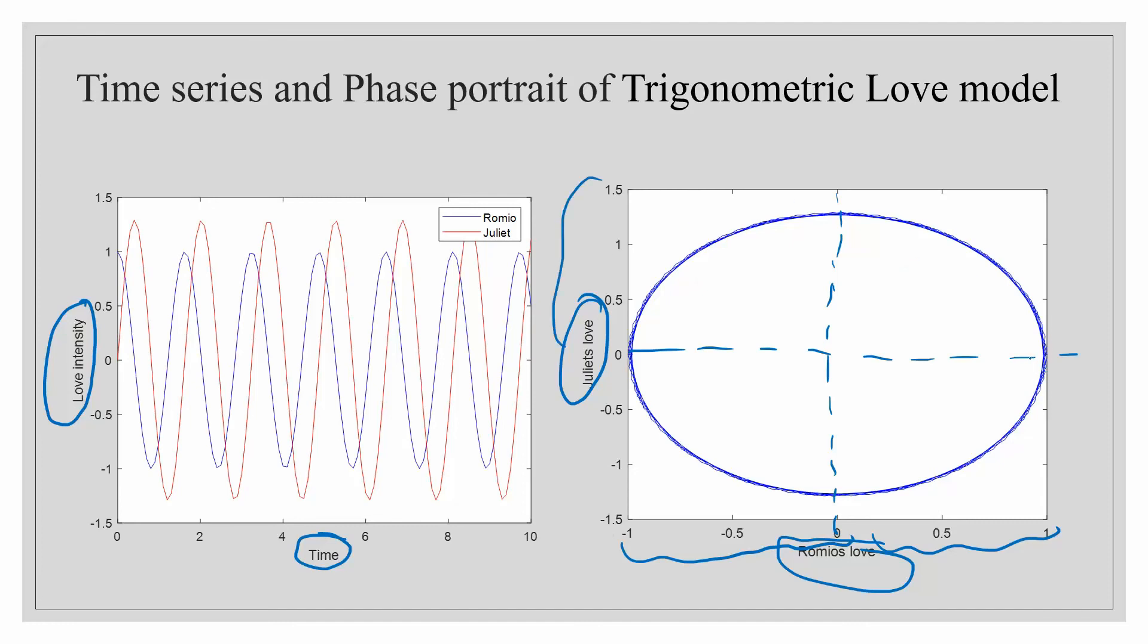Now if you go to the third phase you can see that here now Juliet backs off and Romeo started getting feeling for her. So this one the Romeo has a positive and Juliet has negative love intensity and in this phase you can see that both of them have the negative love intensity. So you can see that only in the second coordinate both are having positive feeling for each other.